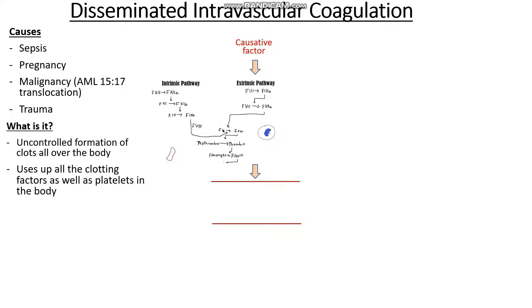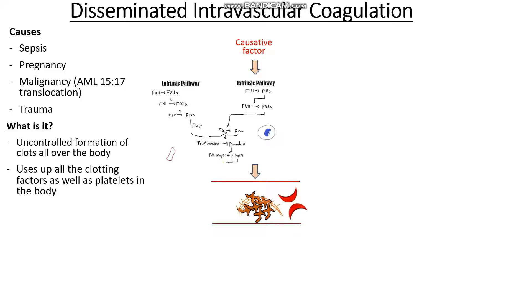These platelet clots can be very sharp due to the fibrin sheath, so any red cell that passes through them might get sheared in half. This makes DIC a form of microangiopathic haemolytic anaemia.